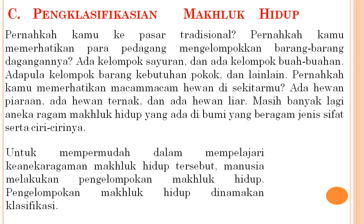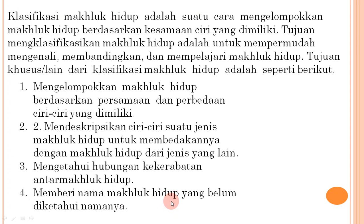Bagaimana pengklasifikasian makhluk hidup? Di pasar tradisional pedagang mengelompokkan barang dagangannya: ada kelompok sayuran, buah-buahan, dan barang kebutuhan pokok. Hewan pun dibedakan menjadi hewan peliharaan, ternak, dan liar. Untuk mempermudah mempelajari keanekaragaman makhluk hidup, manusia melakukan pengelompokan yang dinamakan klasifikasi. Klasifikasi makhluk hidup adalah cara mengelompokkan makhluk hidup berdasarkan kesamaan ciri yang dimiliki, dengan tujuan mempermudah mengenali, membandingkan, dan mempelajari makhluk hidup.